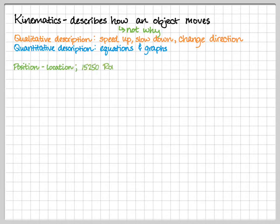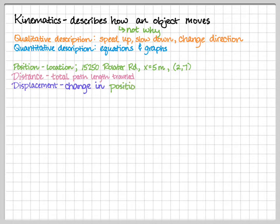First, we've just got a few definitions. So position, it's pretty much a location with respect to some reference point. So for example, Liberty High School is at 15250 Rollator Road. You could have a point on a number line at x equals 5. You could have an ordered pair located at (2,7).